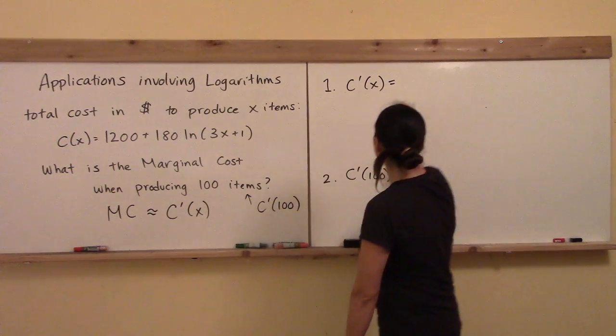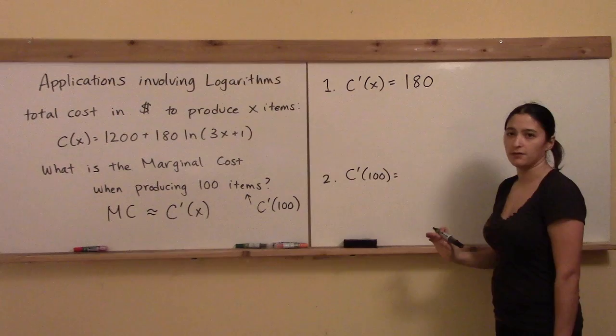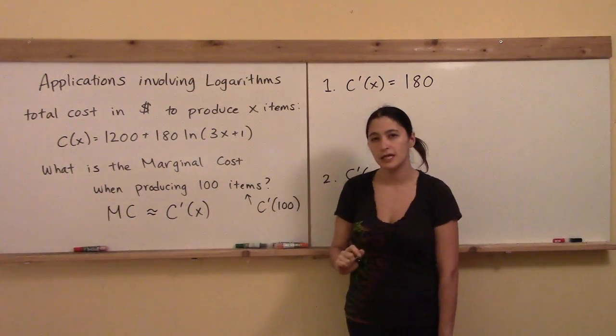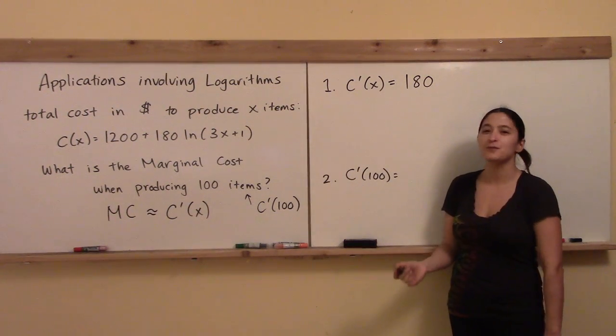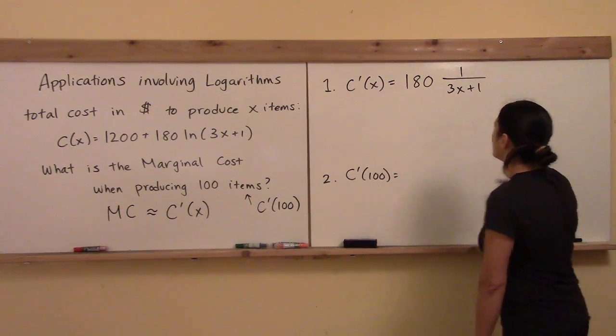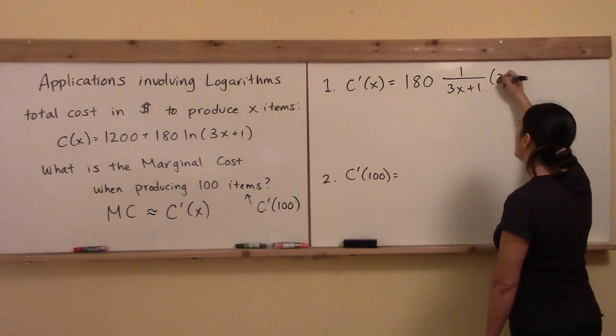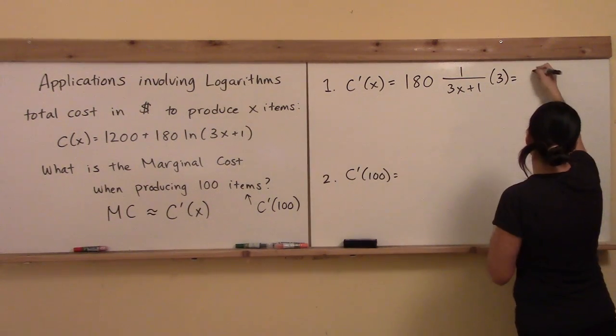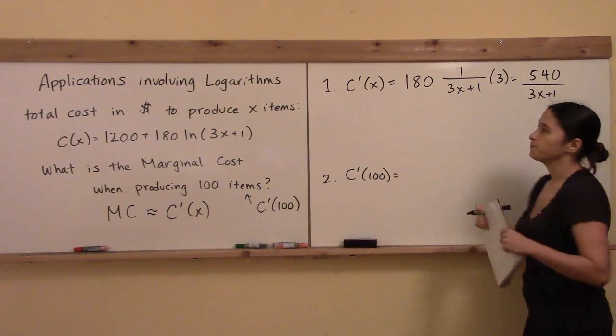And what's the derivative of this term right here? Well, the 180 can just carry right through, so due to the constant multiple rule, I'll just put the 180 right there. And really it just boils down to what is the derivative of the log of 3x plus 1. So if you've seen the previous video, then you think, oh, this one's not so bad, right? So you're just going to do 1 over the inside function, 3x plus 1 like that. And then what am I forgetting? To multiply by the derivative of that inside function, that's right. Don't forget to multiply by that 3. And so the number that we get is going to be 540 divided by 3x plus 1.